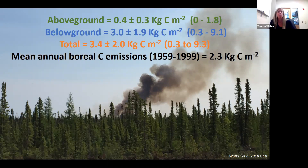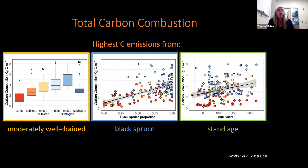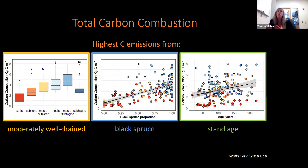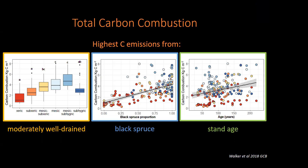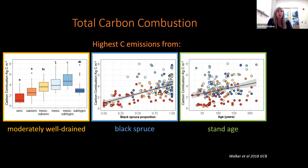We wanted to know what is driving this variation in combustion. Carbon combustion was primarily driven by moisture category, black spruce presence, and stand age. Combustion was highest in moderately well-drained sites — shown on the left-hand panel — where carbon combustion is low in dry landscapes because there's relatively little fuel to begin with, and low in really wet landscapes because those soils are either frozen or too wet to burn. Combustion was also higher in black spruce stands, shown in the middle panel, because these trees are highly flammable and accumulate below-ground fuels over time. The right-hand panel shows that combustion is higher in older age stands, which have time to accumulate organic soils that then dominate the combustion.